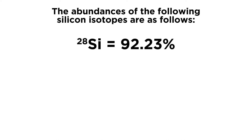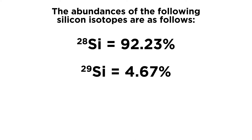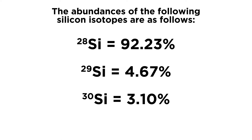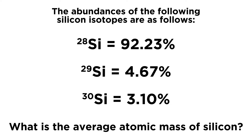Silicon-28 is 92.23%, Silicon-29 is 4.67%, and Silicon-30 is 3.10%. So that means out of all the silicon atoms in the universe, 92.23% of them weigh 28 atomic mass units, 4.67% weigh 29 atomic mass units, and 3.10% weigh 30 atomic mass units. The question is: what is the average atomic mass of silicon?